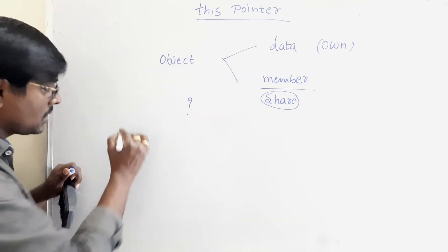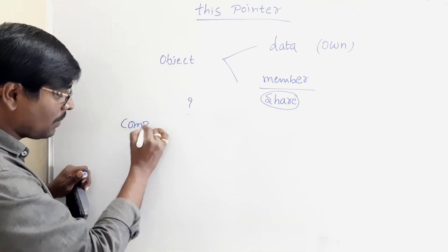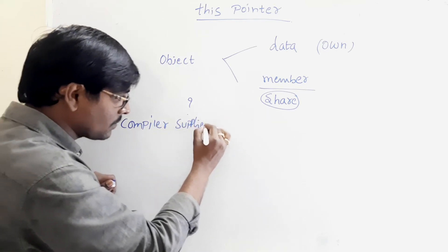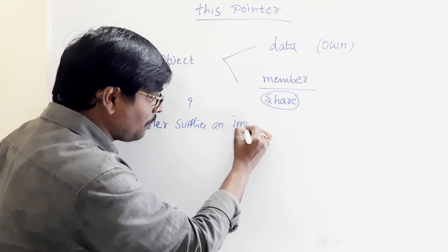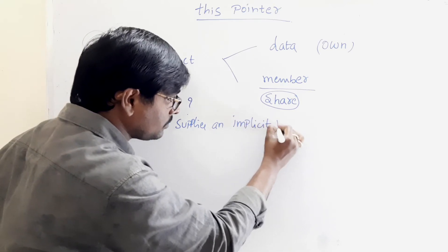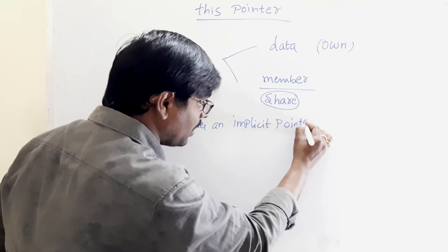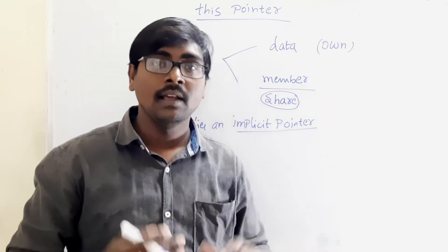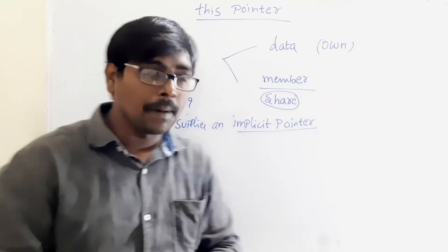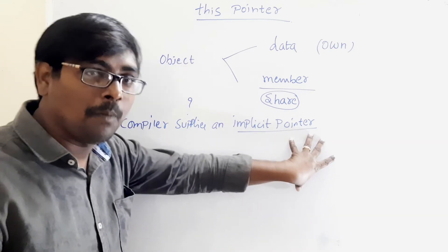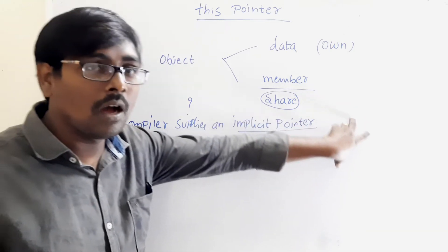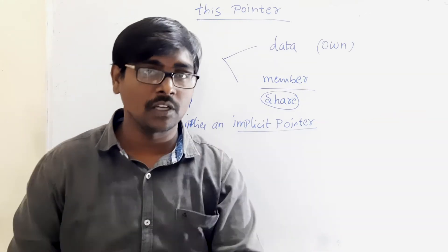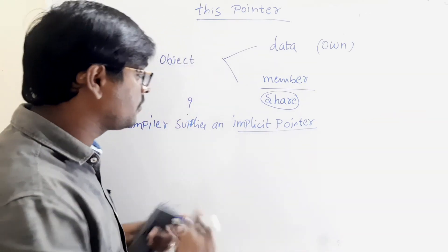Now, for this purpose, internally, what happens? The compiler supplies an implicit pointer. Remember the point? By default, if you are not mentioning anything, the compiler supplies an implicit pointer along with the names of the function.